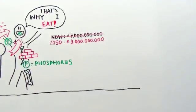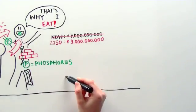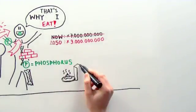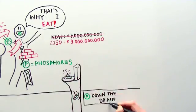You use the new phosphorus to replace the old. Part of it leaves your body at the other end. Which means you flush phosphorus down the drain.